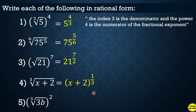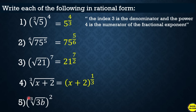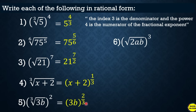Another example: the cube root of 3b squared. Here 3b is grouped together; 2 is the numerator (exponent) and 3 is the denominator (index). Enclose 3b in parentheses and raise to 2 over 3. Another example: the square root of 2ab cubed. Write this in exponential form.